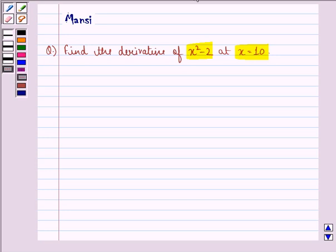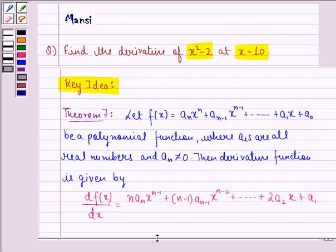Before starting with the solution, let us see the key idea behind the question. That is theorem 7 of your book that says let f(x) be equal to aₙx raised to power n plus aₙ₋₁x raised to power n minus 1 and so on till a₁x plus a₀ be a polynomial function where aᵢ's are all real numbers and aₙ is not equal to 0.